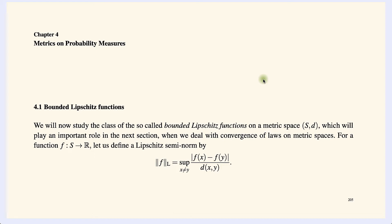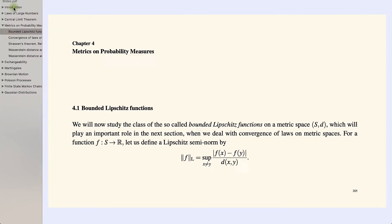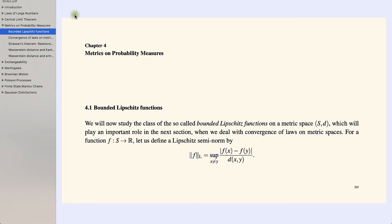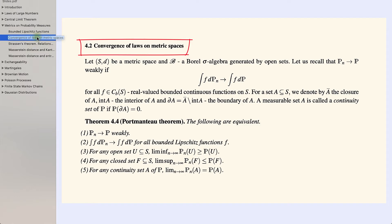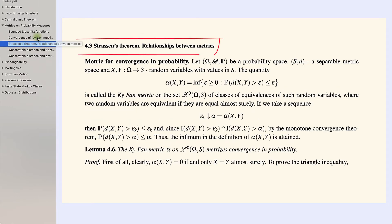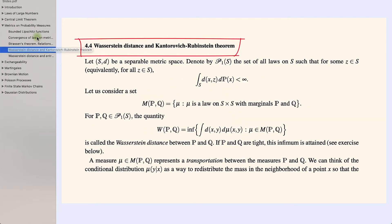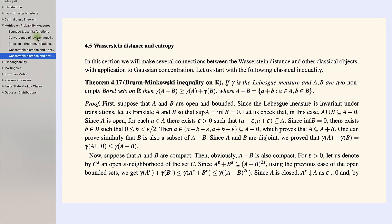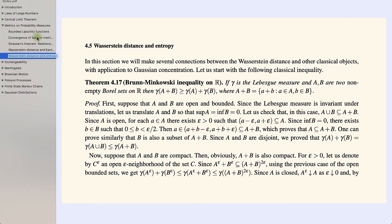Let's look at the general structure of this chapter. Looking at the table of contents, we have five sections: the first is Bounded Lipschitz Functions; the second is Convergence of Laws on Metric Spaces; then Strassen's Theorem; Relationship Between Metrics; and then Wasserstein Distance and the Kantorovich-Rubinstein Theorem; and the final section is Wasserstein Distance and Entropy. I'll go over each section with a few quick comments to get a general idea of what this chapter is about before we dive into each section in more detail.